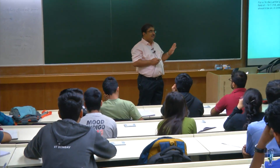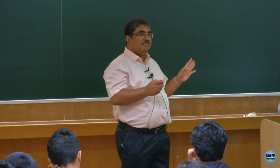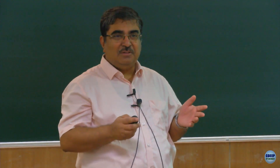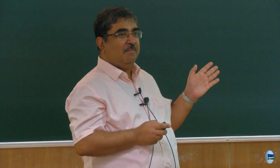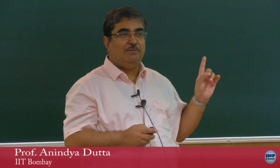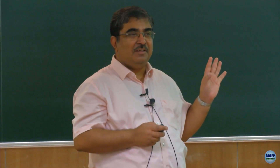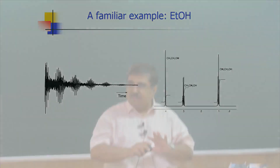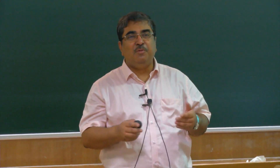To conclude, unless we show experimental results we cannot claim what we are saying is true. Let us complete today's discussion by showing the spectrum of ethanol — the molecule we have been using as an example throughout this course. This is the actual time domain data for ethanol, and when you Fourier transform it you get the spectrum we are all familiar with — recorded using the 90 degree pulse we have discussed. That concludes our discussion of how to record an NMR spectrum. We will see what more we can do in the next class.